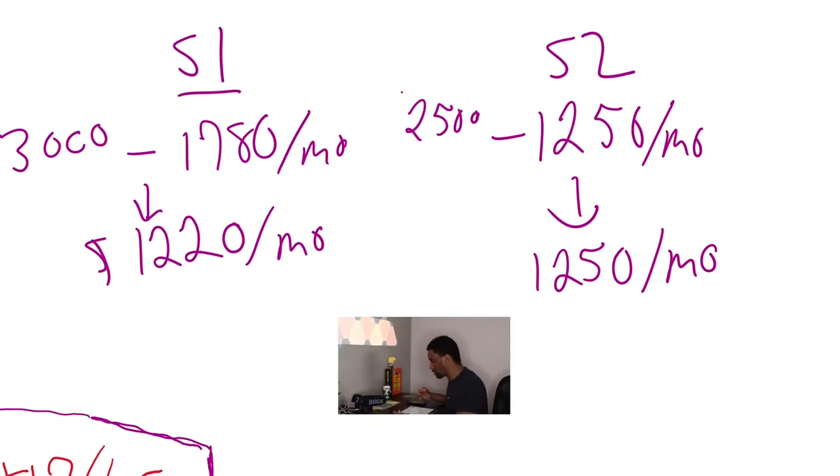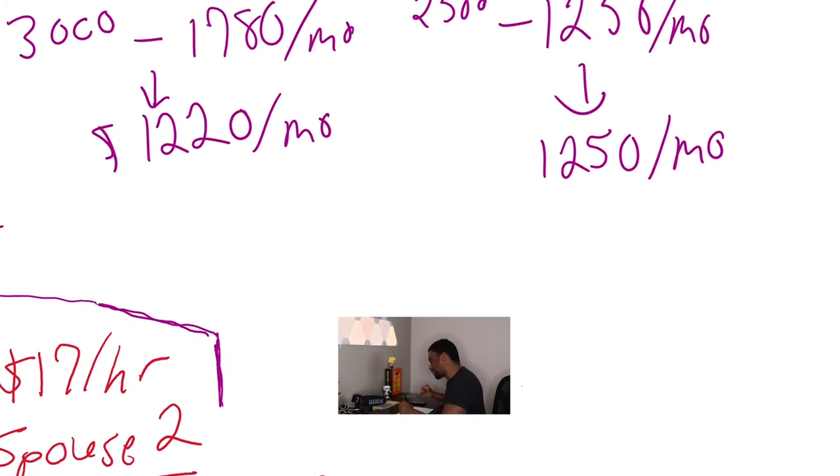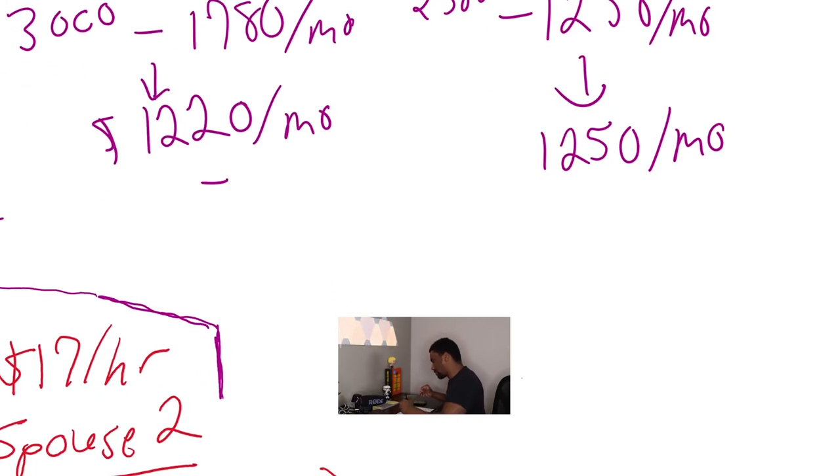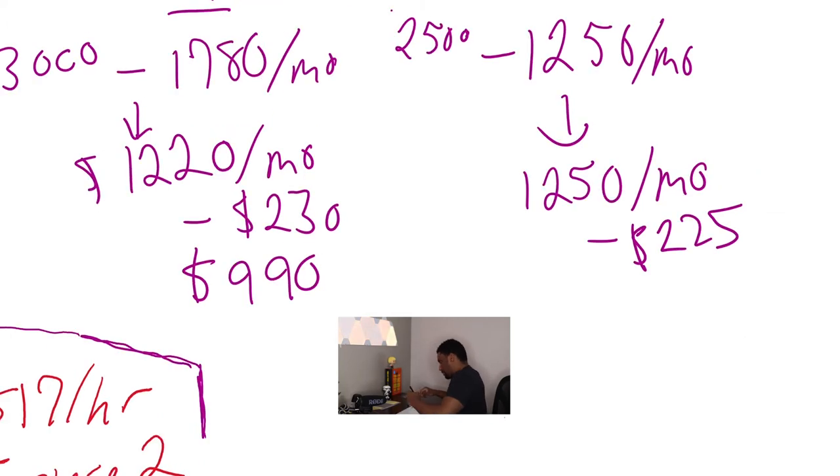So when you subtract his debt, I think he pays $230 per month and she pays $225 per month on average. So he's left with $990 per month and she is left with $1,025. So that's how it works.